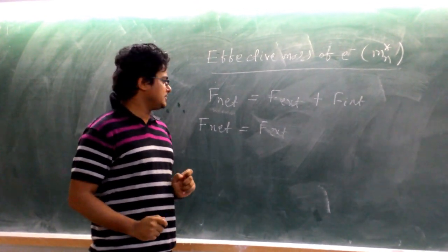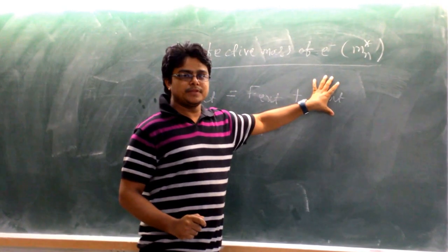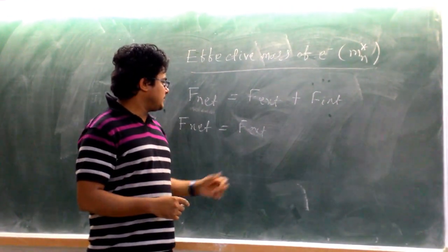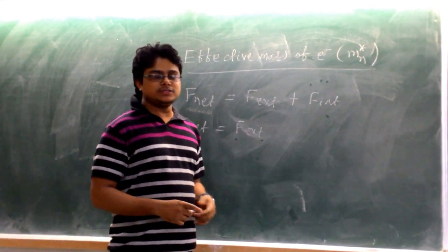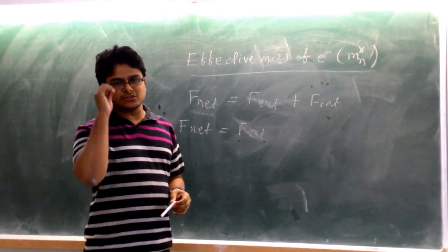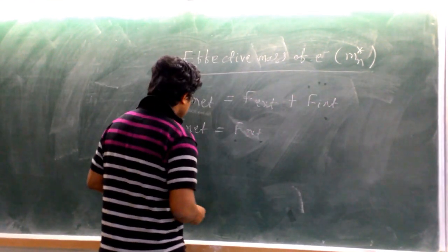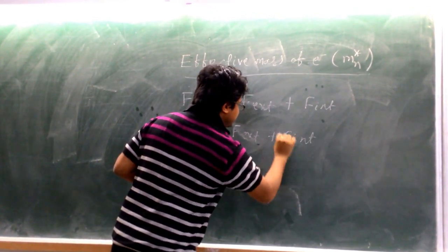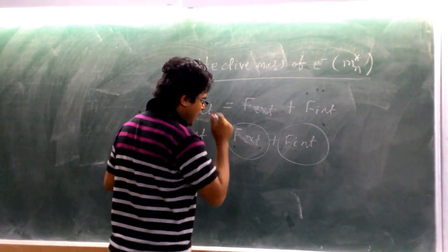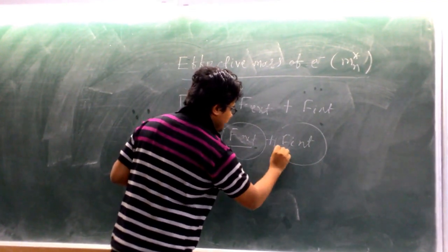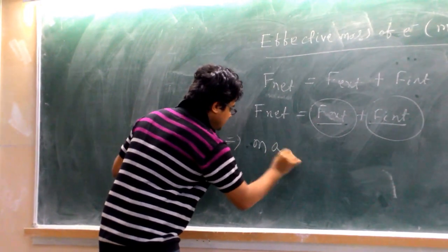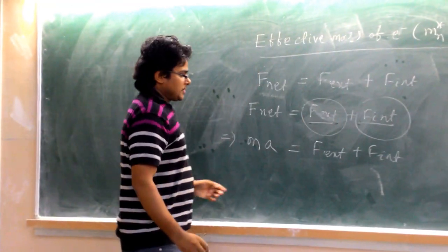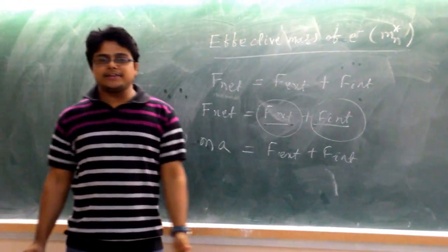But if you consider the same electron in a lattice, then you have to take into account the internal force, because there are many positive ion forces and other electrons present in the crystal lattice. Hence, the force experienced by the electron will be the external force plus the force from positive ions and all other electrons. So here, mass times acceleration equals external plus internal force — and it is quite difficult to find out the exact internal force acting on that electron.